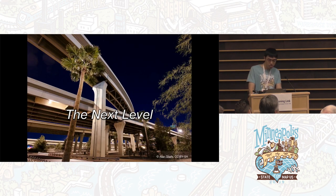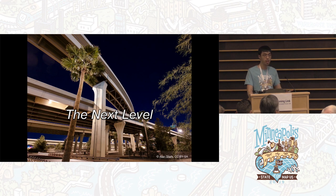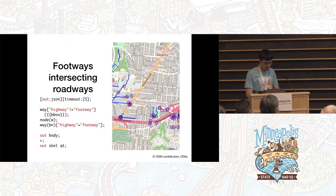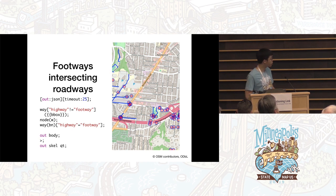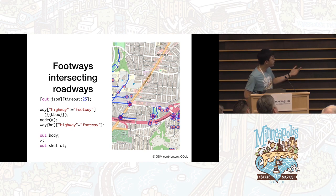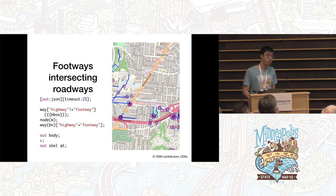So far I've shown you what the wizard can generate in terms of Overpass QL, but the reason I showed you that language is that it's a starting point — the language can do a lot more. For example, recursion statements and filters let you drill down into a way's nodes or a relation's members, and drill up into the ways containing a node. This query finds footways that intersect roadways — possibly candidates for crosswalk tagging.